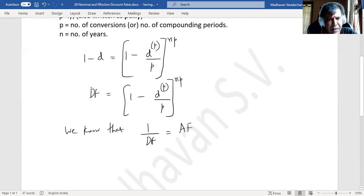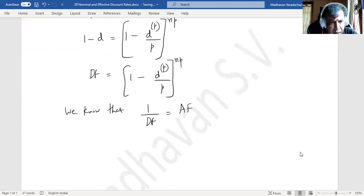If I completely reverse this, converting both sides to its reciprocals—bringing the discount factor to the right side to the denominator—we will have 1 by DF.